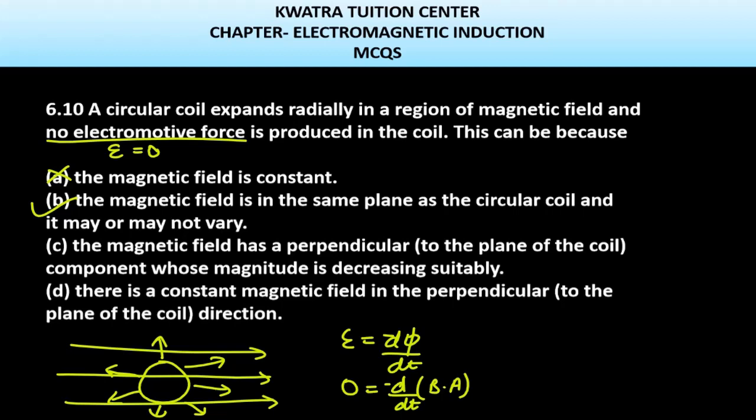Let's check for c now. They are saying the magnetic field has a perpendicular component whose magnitude is decreasing. So yes, this can be possible as well. We can see how. Let's say that you have a magnetic field and it is perpendicular in nature like this.